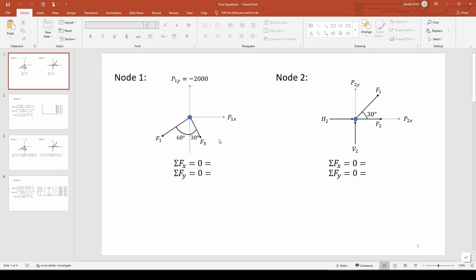For now, let's write the force balances at this node. In the horizontal direction, we have F3 sine of 30 and P1X pointing to the right and F1 sine 60 pointing to the left. In the vertical direction, we have P1Y pointing up, although the value of P1Y is technically negative since the force is applied downwards. F1 cosine of 60 and F3 cosine of 60 both point in the negative y direction as well.